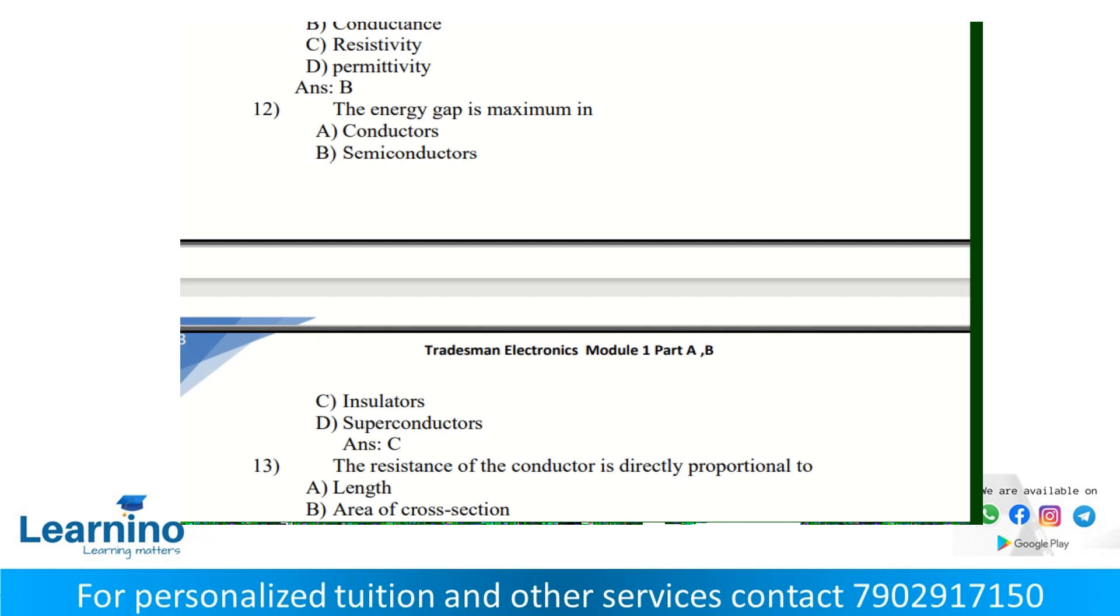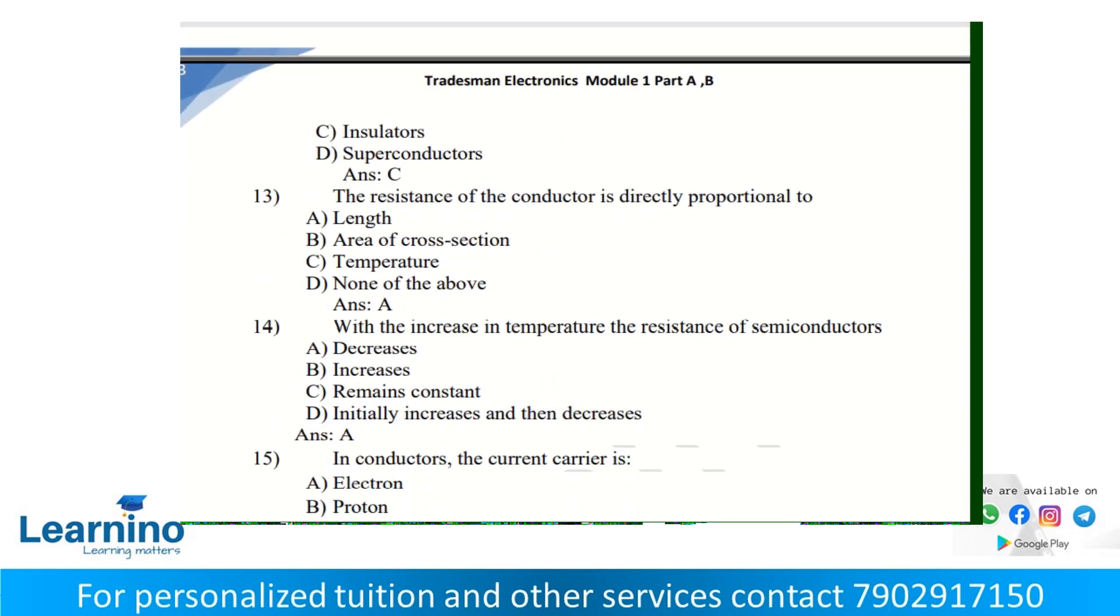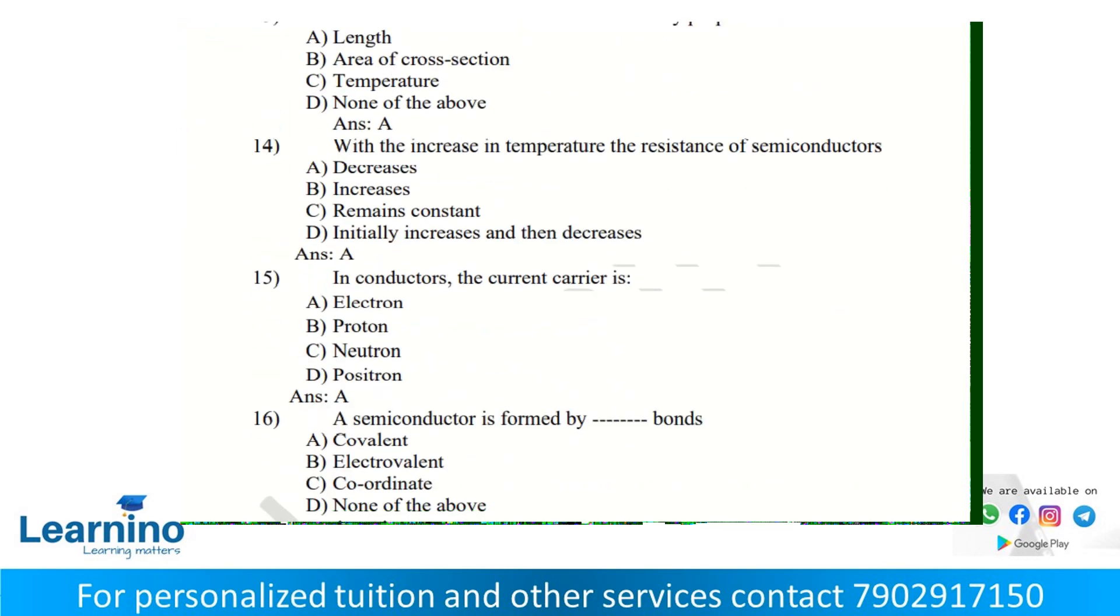The resistance of the conductor is directly proportional to length, as resistance equals rho into length divided by area. With the increase in temperature, the resistance of semiconductors follows the formula: rho t equals rho 0 e raised to minus Eg by kT. Here, rho t is resistivity at T degree Kelvin, Eg is band gap energy, k is Boltzmann constant. The answer is A.